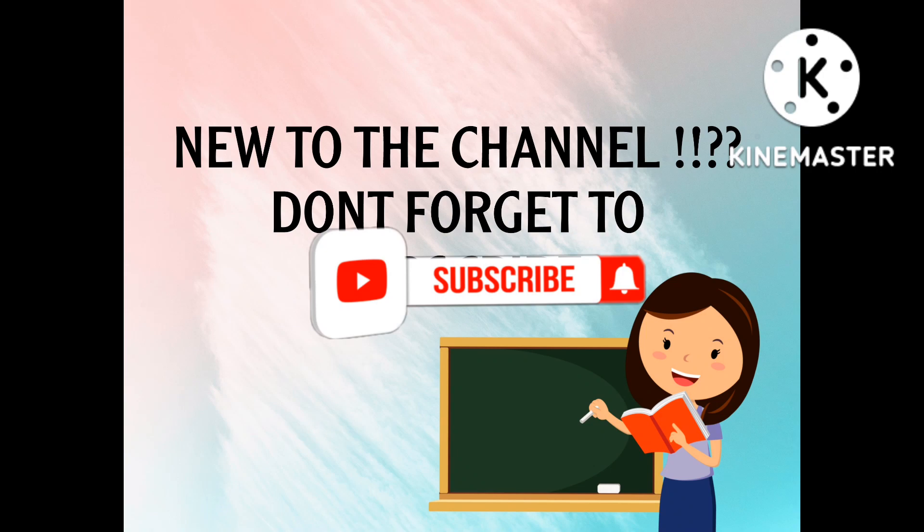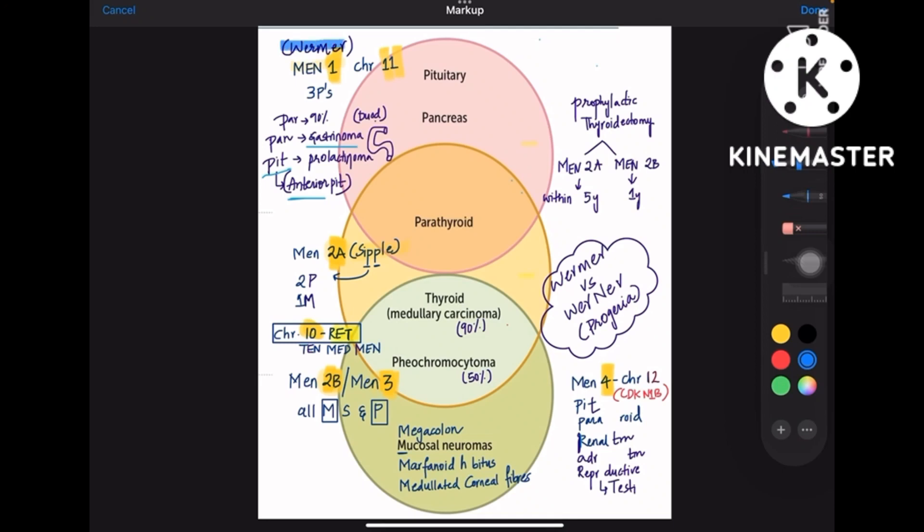Let's get started. MEN1 is otherwise called Wermer syndrome, whereas MEN2 has two divisions: 2A and 2B. 2A is Sipple syndrome and 2B is MEN3 and MEN4 syndrome. So these are the four syndromes that you need to know.